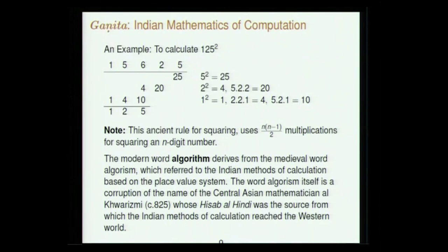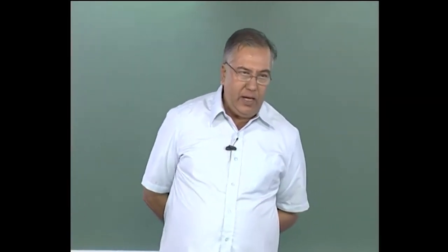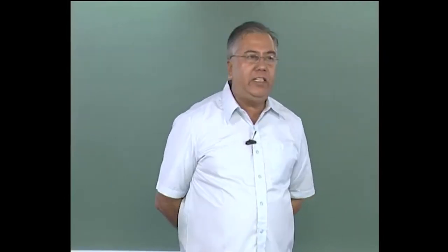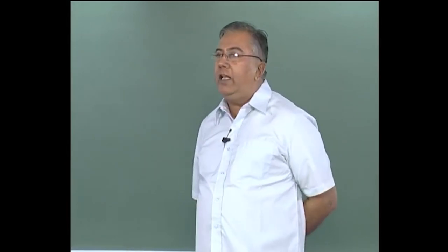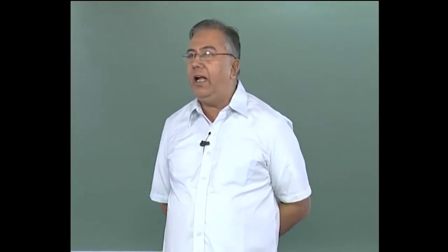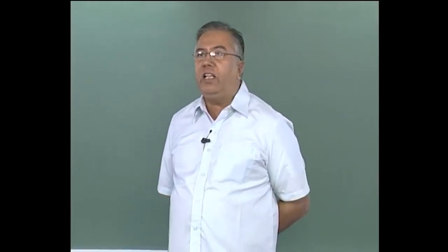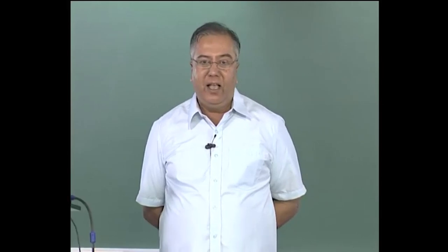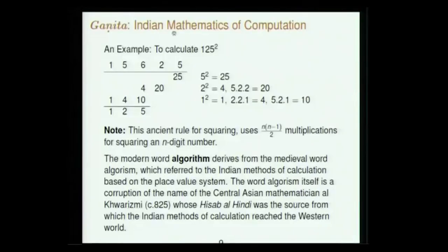The word 'algorithm' itself has a history — it was the name given to Indian methods of calculation. It originates from the name of a Central Asian mathematician called Al-Khwarjimi, who in the 9th century wrote a book on Indian methods of calculation using the decimal place value system. That book was called Hisab al-Hindi. Latin versions are available though the original Arabic version is not. This book introduced the decimal place value notation to the Arabic world and later the European world. People who followed this way of calculation were called Al-Khwarjimi, and the word algorithm derives from that name.